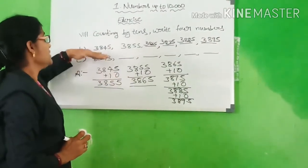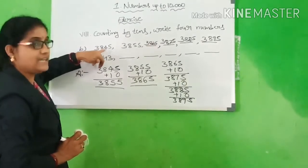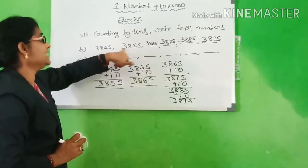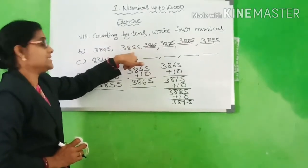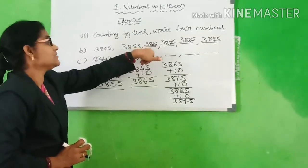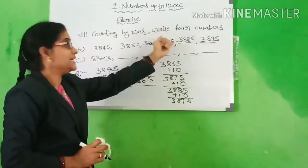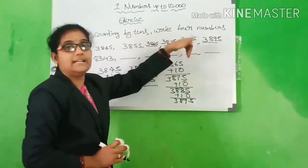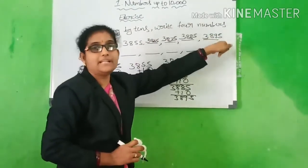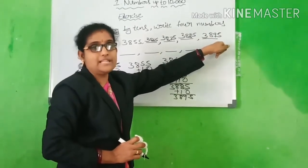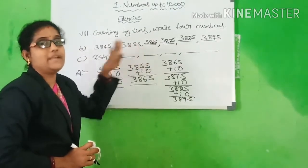Look here, children. The given number is 3,845 plus 10, we get 3,855. Count these numbers per 10 and we get 3,865. Then 65 after adding 10 is 75, 75 after adding 10 is 85, 85 after adding 10 is 95. You are only changing the 10s here. Understand, children?